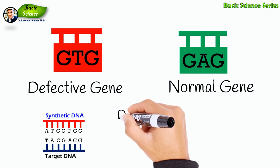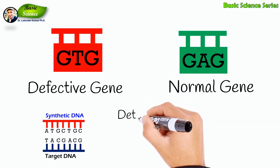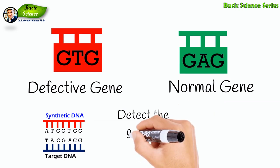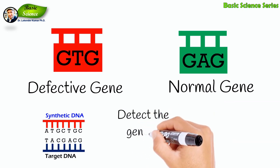As a control, another ASO would be synthesized for the normal sequence. Each ASO is fully complementary to its target sequence and will bind strongly.